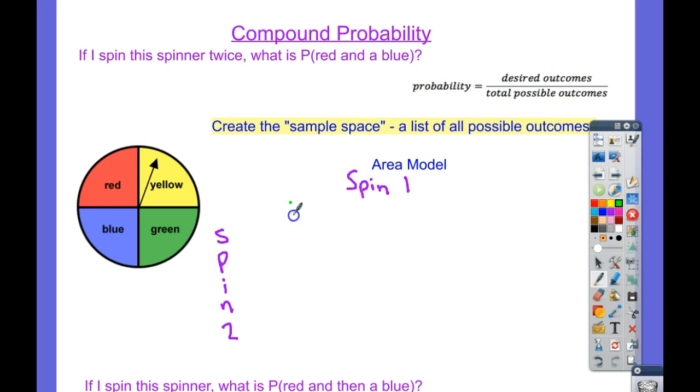And then what we're going to do is put every possibility of spin one up here. So that would be red, blue, yellow, or green up here. And then we're going to go down here for spin two. What are all the possibilities for spin two? Well, there's red, blue, yellow, and green.